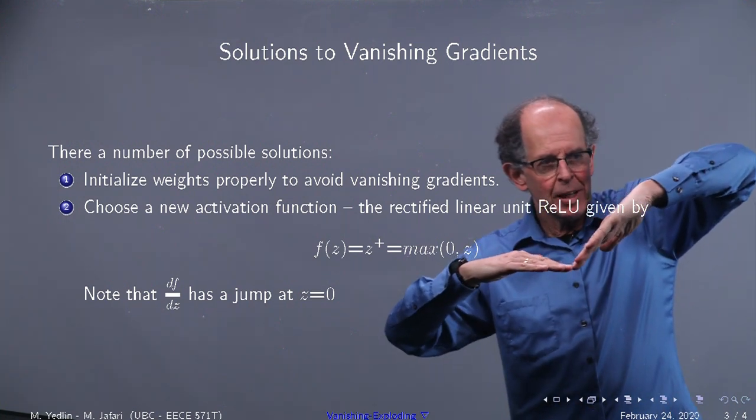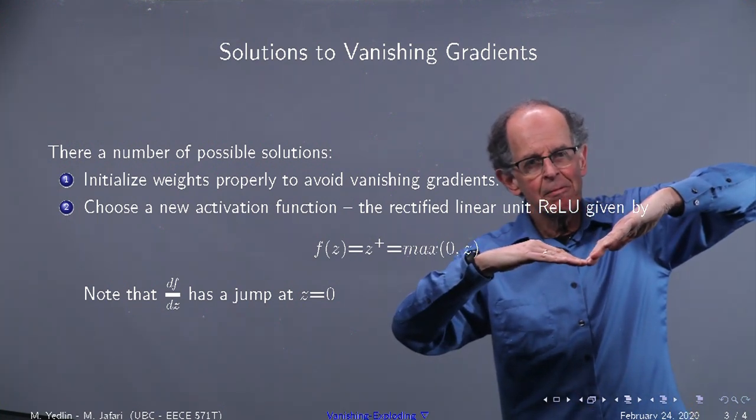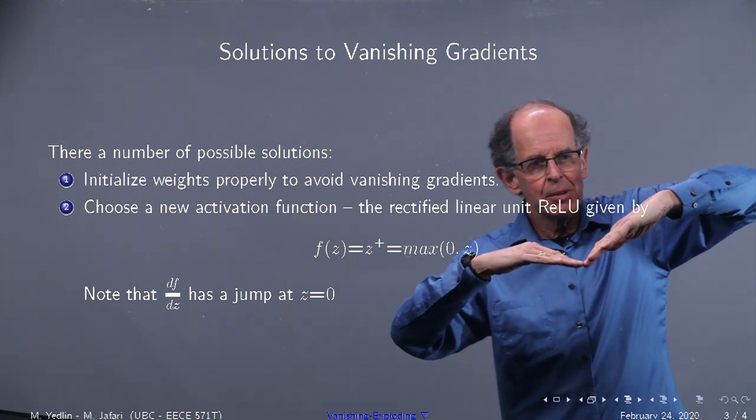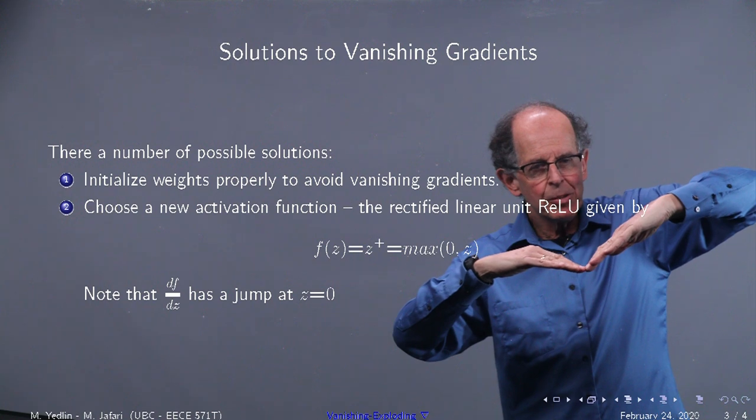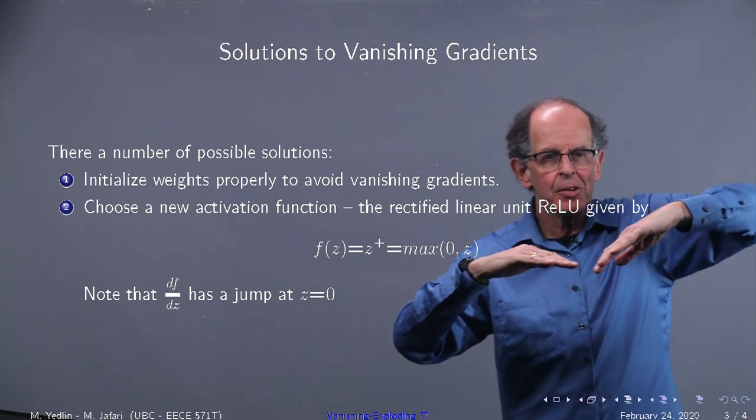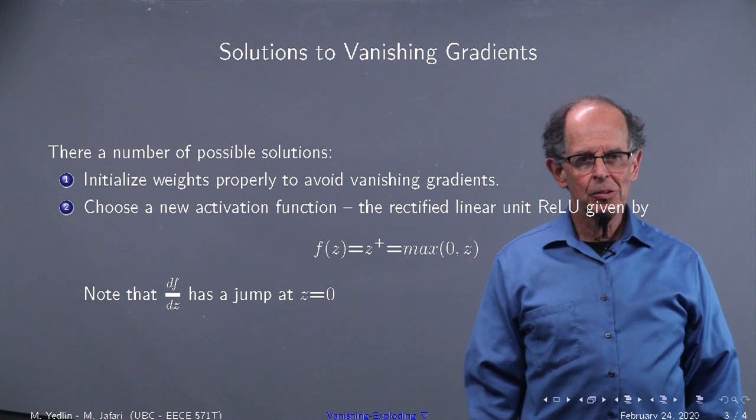Because it takes off, the function is like that. So right at the knee, where the flat zero part reaches the z part, for input z, you get z. So it's just at 45 degrees. And the df/dz has a jump.